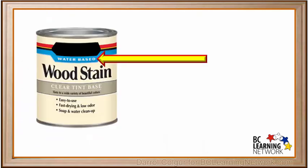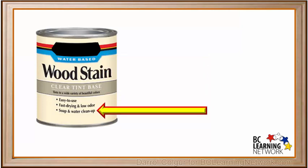Some products that we use, like this type of wood stain, are labeled as water-based. This means that this stain can be dissolved in water before it dries. Therefore, brushes and your hands can be cleaned up using soap and water. Just be aware that once this stain dries, it will not be water-soluble anymore — it will be more permanent.